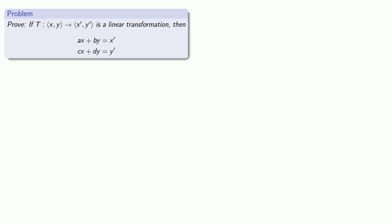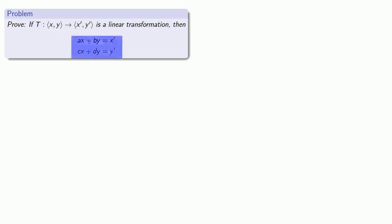Can we go the other way? Suppose I have a linear transformation — then maybe it's possible to express it as a nice set of formulas. How can we do this? One possibility is the following: if we can actually find these formulas, then we've completed the proof. In other words, if I can find a, b, c, and d that will give us formulas for finding the new x and new y values, then we can claim that any linear transformation can be expressed this way.